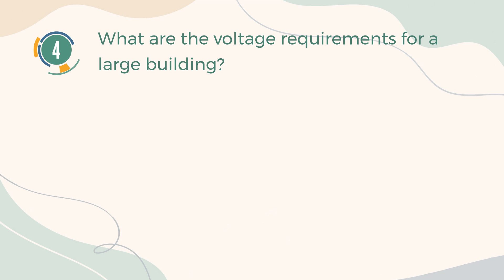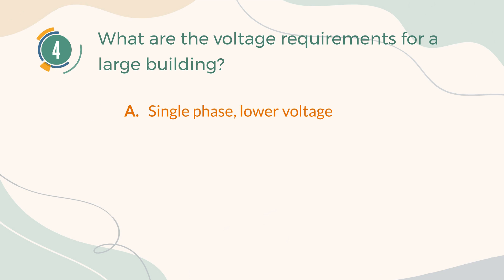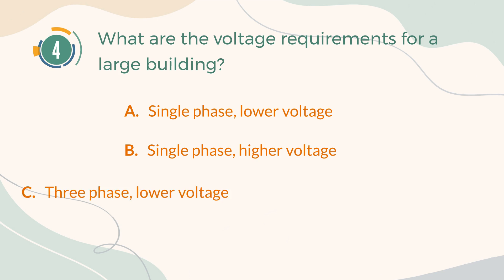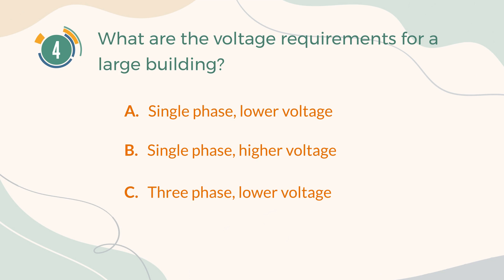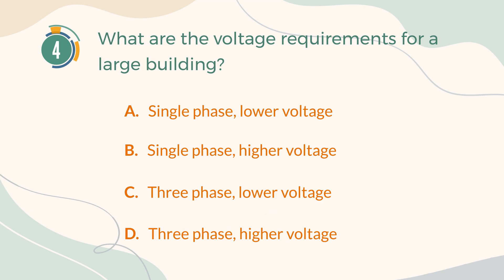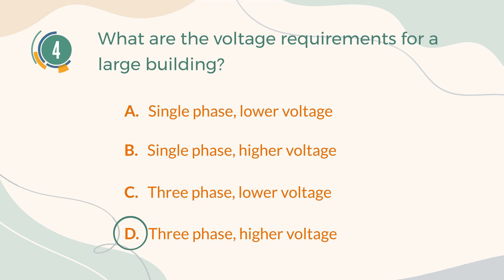Number 4. What are the voltage requirements for a large building? A. Single Phase, Lower Voltage. B. Single Phase, Higher Voltage. C. Three Phase, Lower Voltage. D. Three Phase, Higher Voltage. The correct answer is D. Three Phase, Higher Voltage.